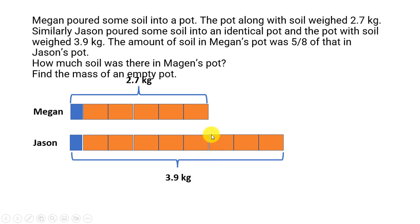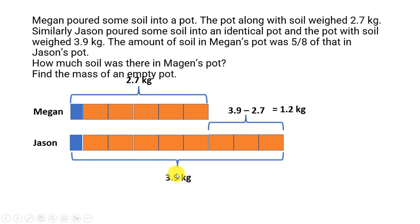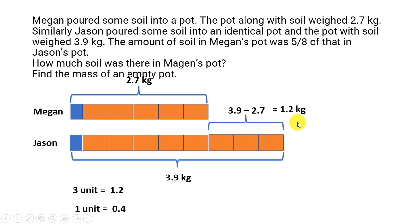From the diagram, we can clearly see there is a difference and the difference is for three units. We can find that out easily because 3.9 kilograms minus 2.7 kilograms will give the weight of these three units, and that is equal to 1.2 kilograms. So three units is 1.2, meaning one unit is 0.4.